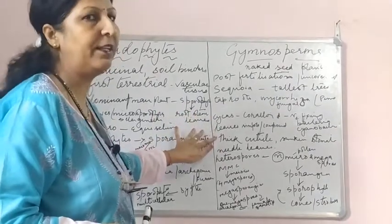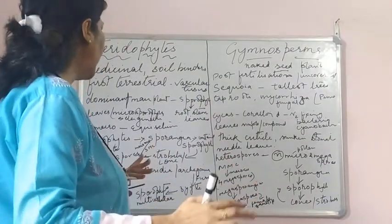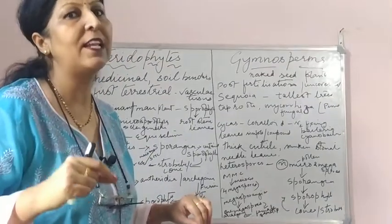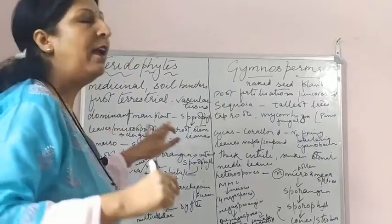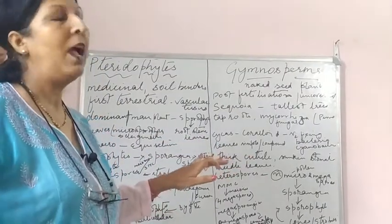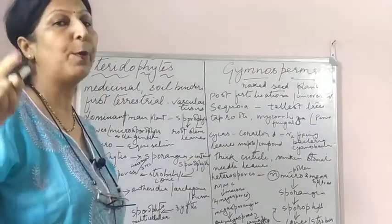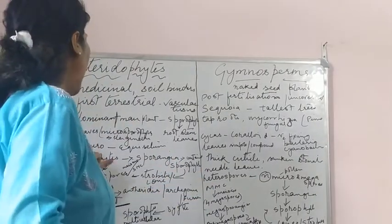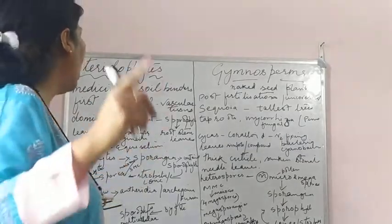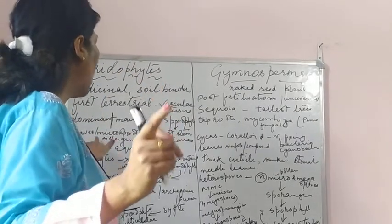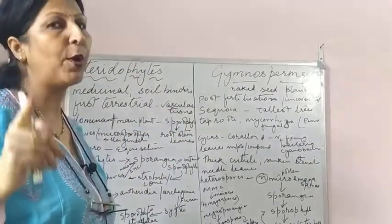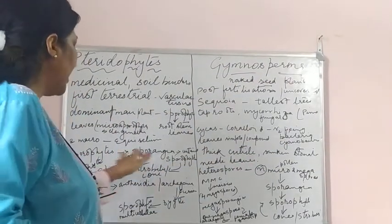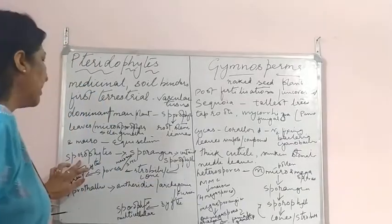In pteridophytes the plant body is differentiated into root, stem and leaves. The leaves are normally very small in Selaginella - Selaginella is a pteridophyte and those small leaves are known as microsporophylls. In Equisetum the leaves are large enough and are known as macrosporophylls.